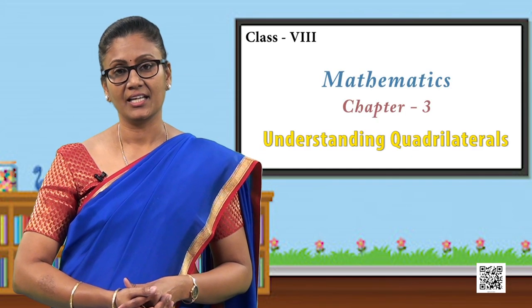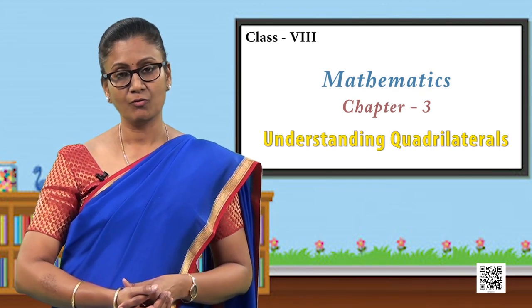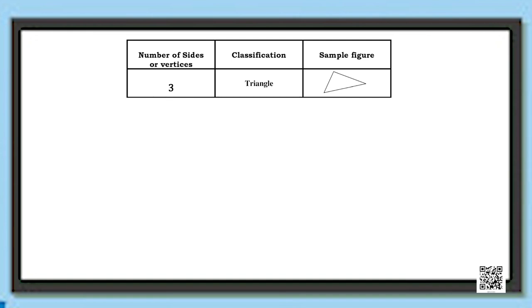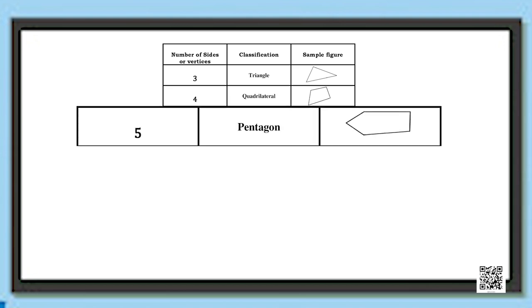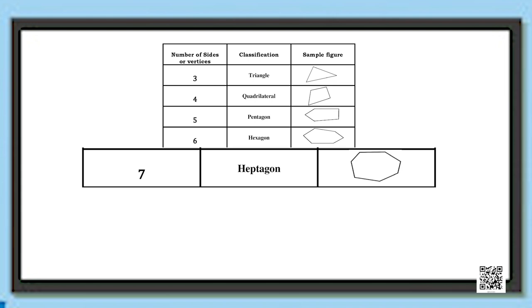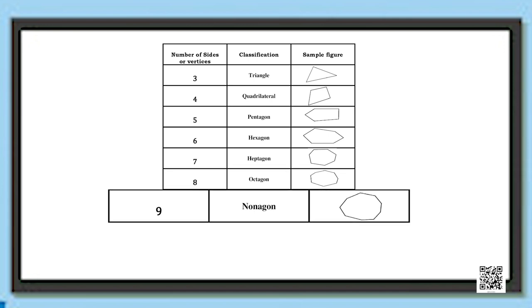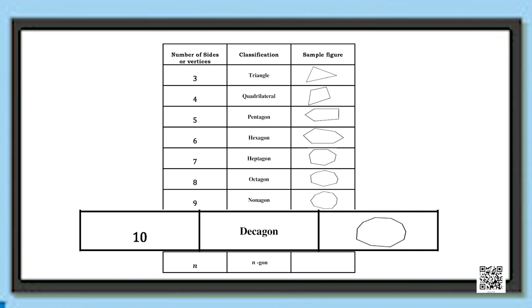Now let us see what names are given to polygons with 3, 4, 5, 6, 7, 8, 9, and 10 sides. A 3-sided polygon is called a triangle. A 4-sided polygon is called a quadrilateral. A 5-sided polygon is called a pentagon. A 6-sided polygon is called a hexagon. A 7-sided polygon is called a heptagon. An 8-sided polygon is called an octagon. A 9-sided polygon is called a nonagon, and a 10-sided polygon is called a decagon.